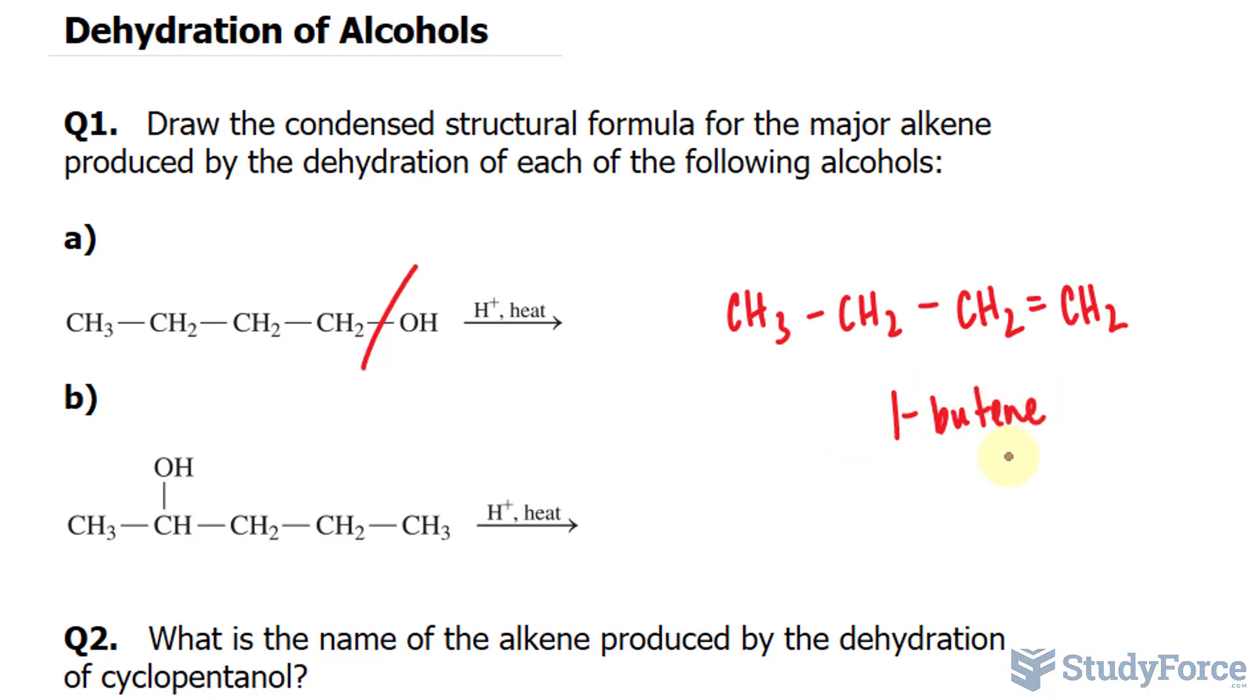Moving on to question B. This time our molecule is 1, 2, 3, 4, 5. I'll write down 2-pent, because it's a 5-carbon chain, pentanol. So we have 2-pentanol, and we want to see what happens during a dehydration reaction.